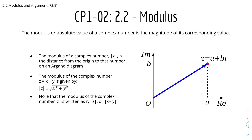So the modulus, or the absolute value of a complex number, is the magnitude of its corresponding value. Here are some notes. The modulus of a complex number, which is denoted by the modulus symbol with modulus signs, is the distance from the origin to that number on an Argand diagram.